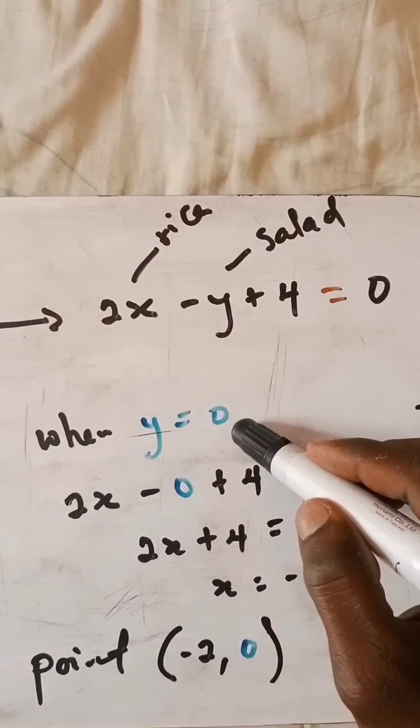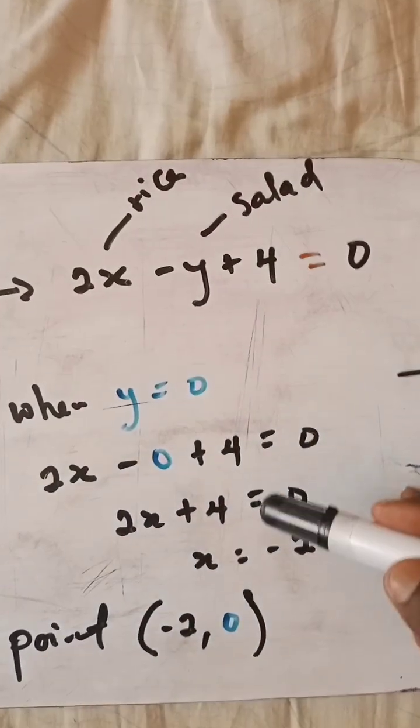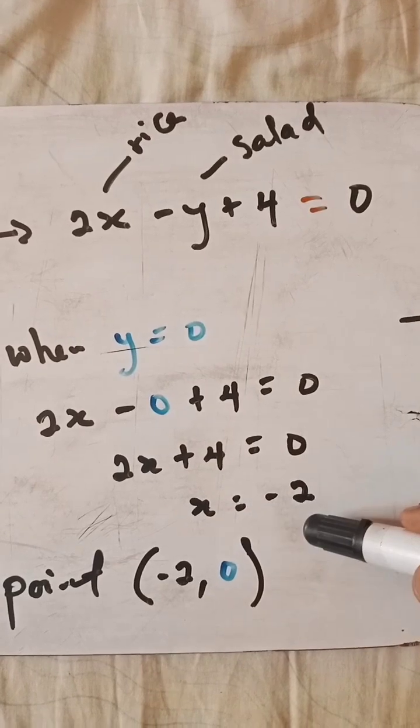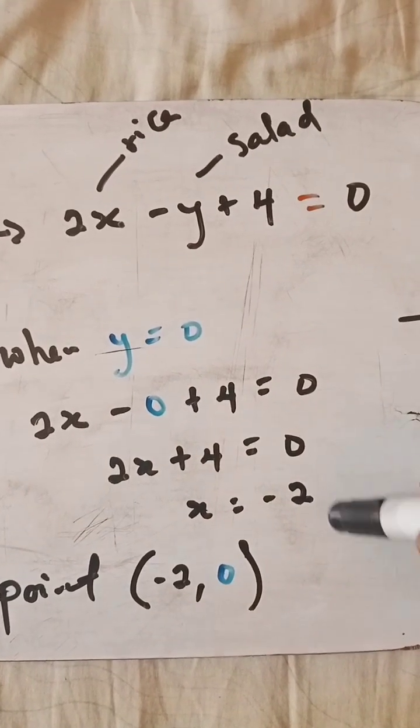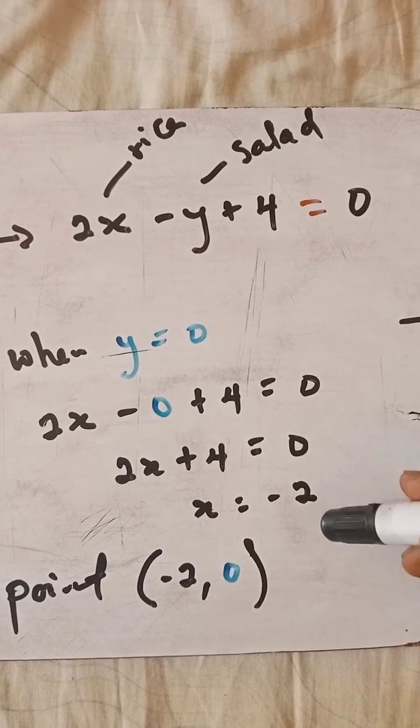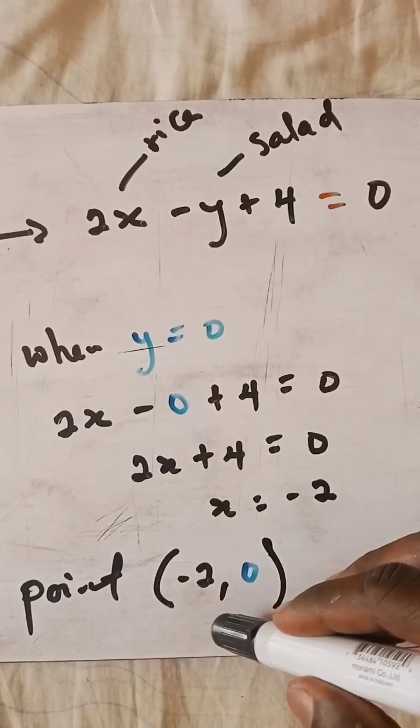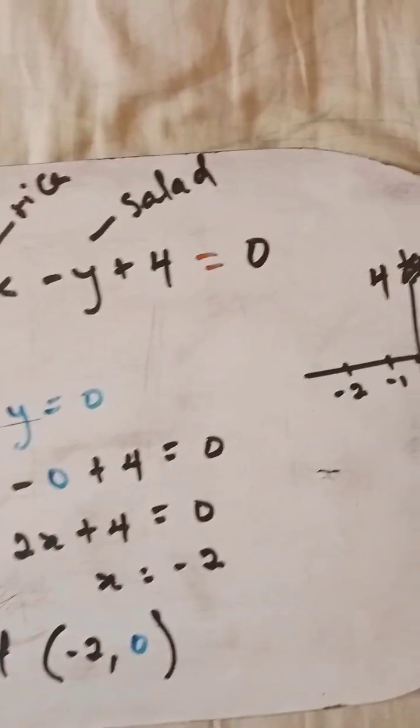So plugging the zero into this equation, by solving you are going to have x to be equal to negative two. So you are going to have the point (-2, 0).